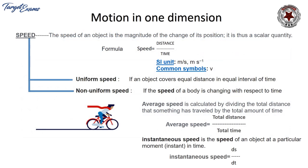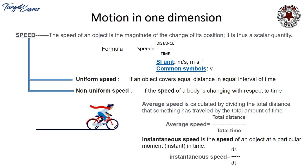The speed of an object is the magnitude of the change of position — it is a scalar quantity. Its formula is speed = distance / time. Its SI unit is meter per second (m/s or ms⁻¹), and the common symbol is small v. Speed has two parts: uniform speed, where an object covers equal distance in equal intervals of time, and non-uniform speed, where the speed of the body changes with respect to time.